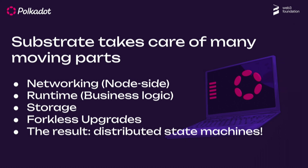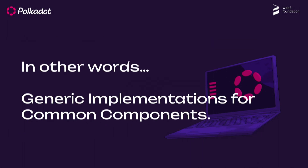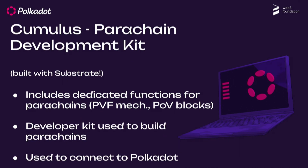In the SDK you have FRAME, Substrate, Cumulus, and the actual Polkadot node implementation. Substrate is the bread and butter of Polkadot — a set of libraries that take care of all the primitives you need to build a blockchain. Think of it like React, which gives you building blocks for a website; Substrate gives you those building blocks for blockchains: networking, defining a blockchain's runtime, storage, and upgrading the blockchain, all in one singular codebase. Cumulus is how parachains connect to Polkadot.